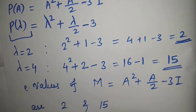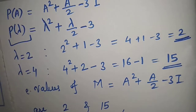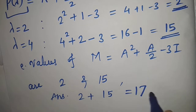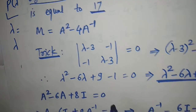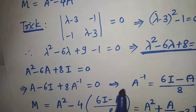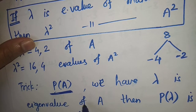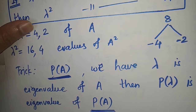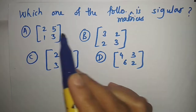The sum of eigenvalues is 2 + 15 = 17. The tricks used were: first, Cayley-Hamilton theorem to find A⁻¹; second, if λ is an eigenvalue of A then p(λ) is an eigenvalue of p(A).